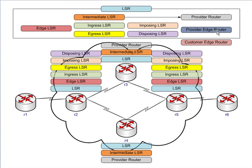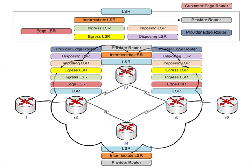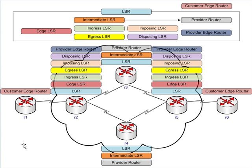Provider edge routers are the routers that will peer with the customer edge routers, and they're generally going to peer using BGP. You can see we're really stacking up the labels here. The customer edge router is your customer router that peers with the provider — that's going to be R1 and R6 in our case. So we've got all these different routers labeled with their definitions.